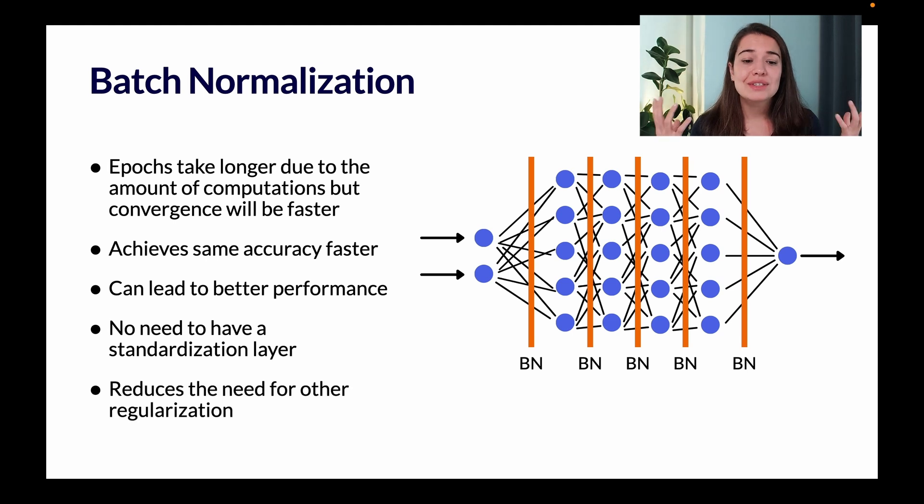And lastly, it was seen that batch normalization actually reduces the need for doing regularization. If you remember, regularization is something we did to deal with overfitting. But with batch normalization, you don't even have to do that anymore. But of course, you might need to try this out for your own network and then see if that's actually the case or not. But that was shown that it is actually one of the other benefits of batch normalization. So that was all that I want to say in terms of how batch normalization works and the benefits of batch normalization. Now, let's see how we can implement it using Keras and Python.